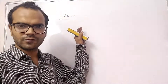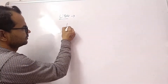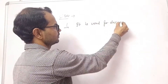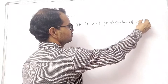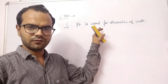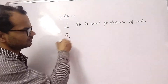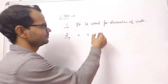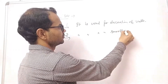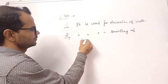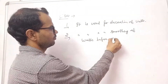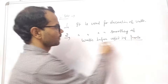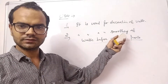Next, the uses of POP. First, it is used for decoration of walls. Second, it is used for smoothing of walls — it is applied as a smoothing agent on walls before painting or finishing.